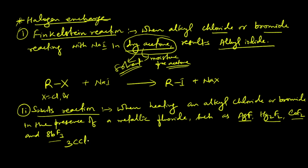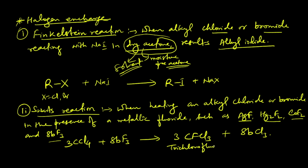CFCl3 is trichlorofluoromethane, also called Freon 11 — it has one fluorine. Freons are chlorofluorocarbons used as refrigerants in refrigerators. However, Freon 11 and Freon 12 disturb the atmospheric ecosystem by causing ozone depletion. Chlorofluorocarbons go and react with ozone in the ozone layer, forming radicals; this allows ultraviolet light to pass through instead of being reflected back. That is why CFCs are now banned as refrigerants.